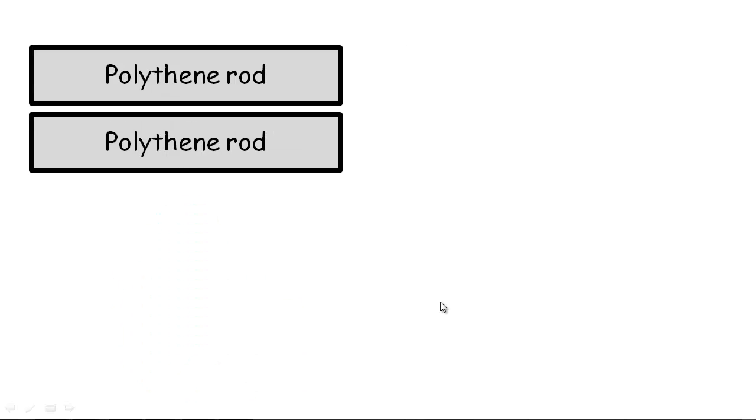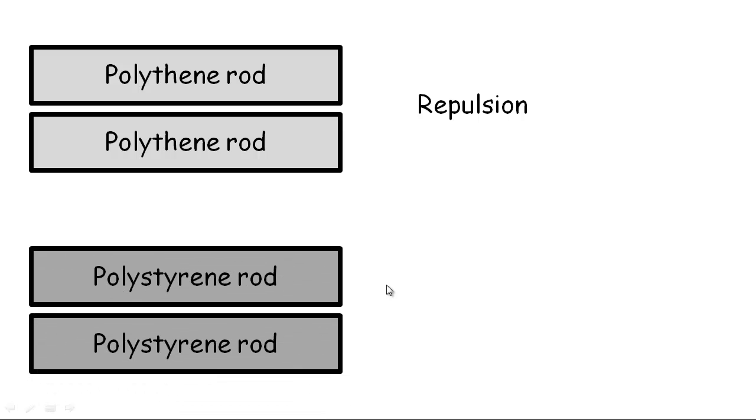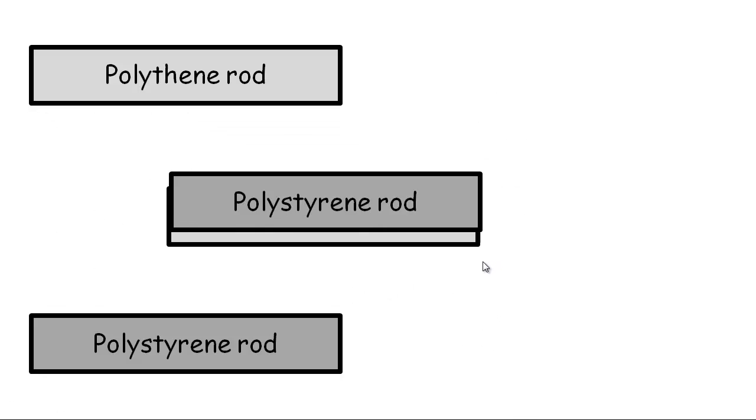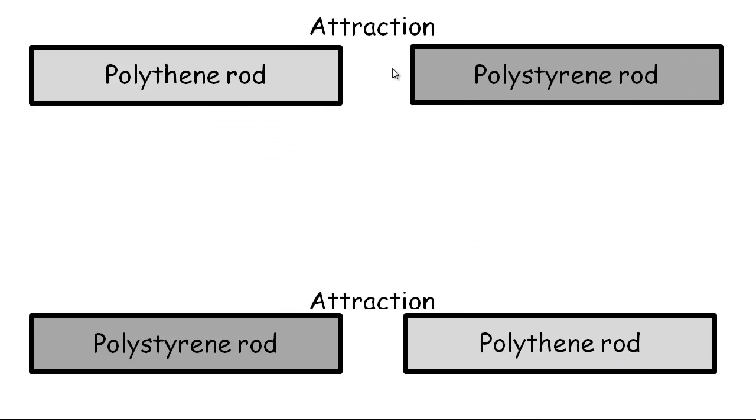Right, so what's needed is further investigation. If you bring two polythene rods together, as before, we find that you get repulsion. But the same is also true of two charged polythene rods. They will also repel. Swapping these around, as long as they're all charged, in this case you'll get attraction and attraction.